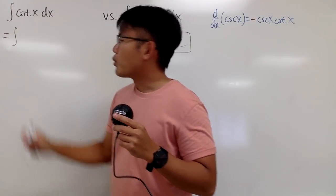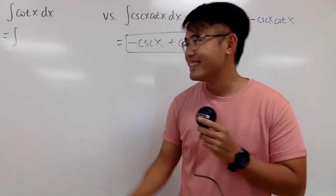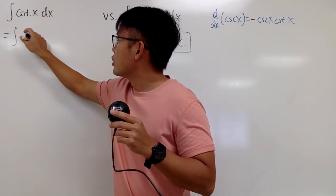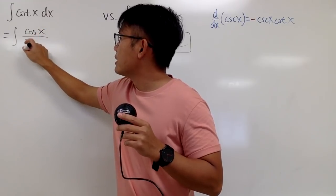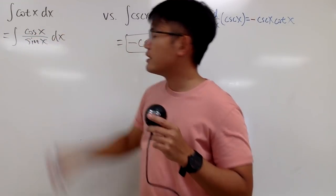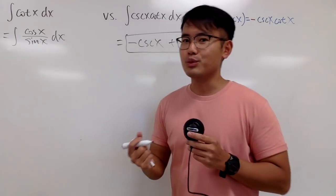Okay, this is going to be the integral, and remember cotangent x is what? This is the same as cosine x over sine x, and then you have the dx. And now we have more things to work with.